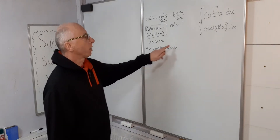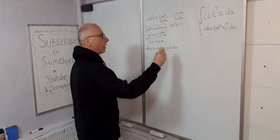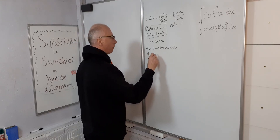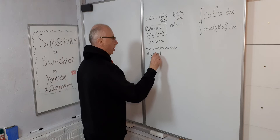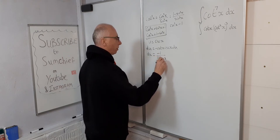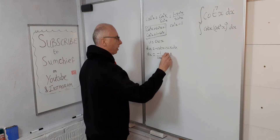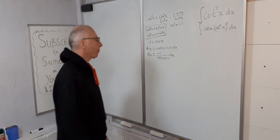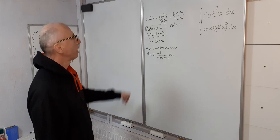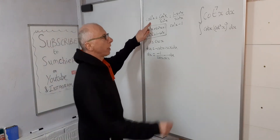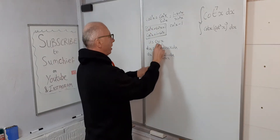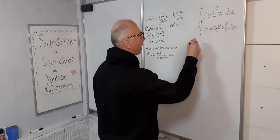This is going to work out really well for us. Let's isolate dx, so dx equals minus 1 over (cot(x) · csc(x)) du. Now we can use our identities to work things out.